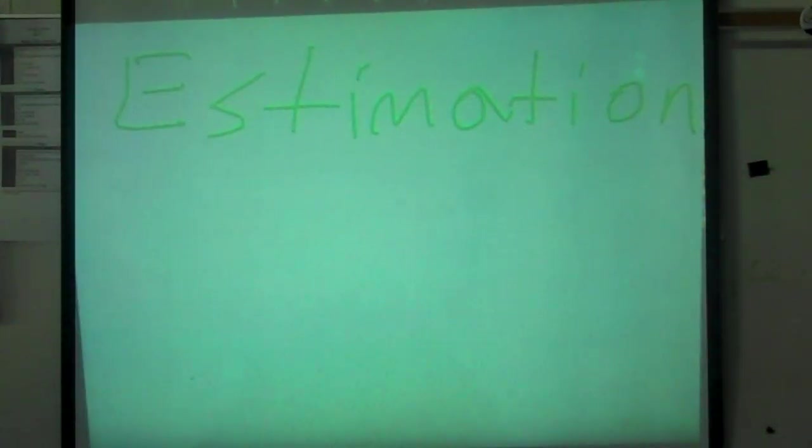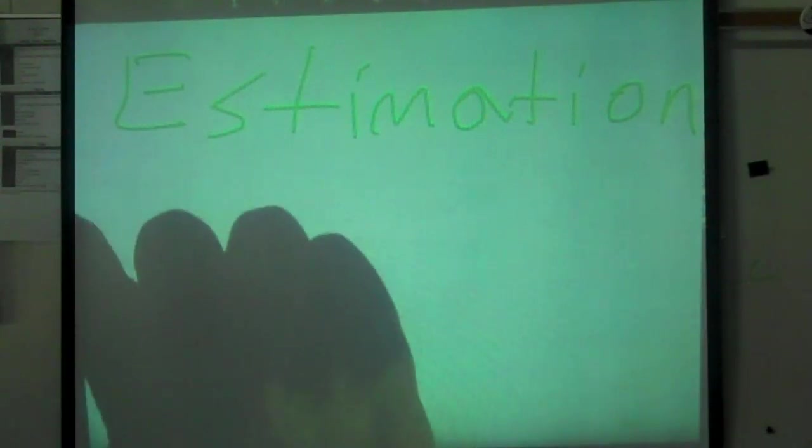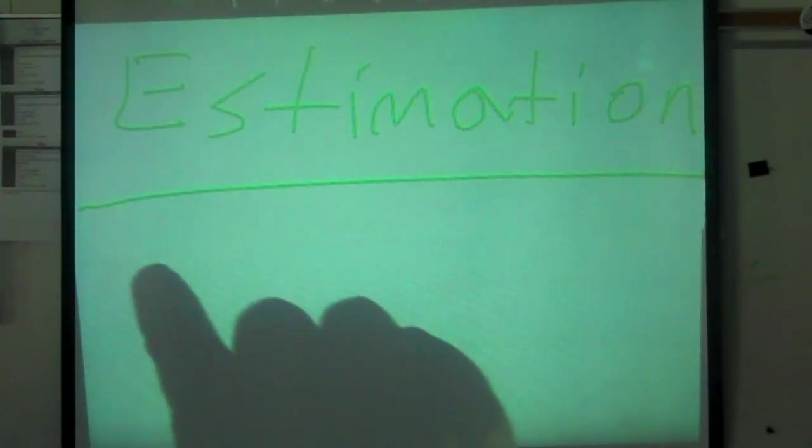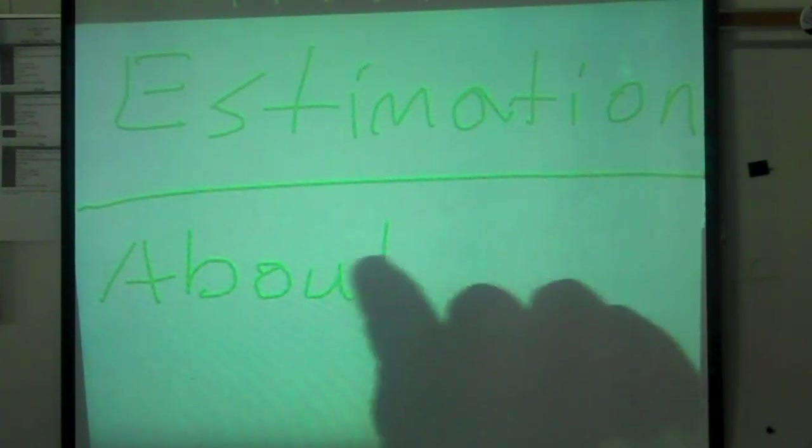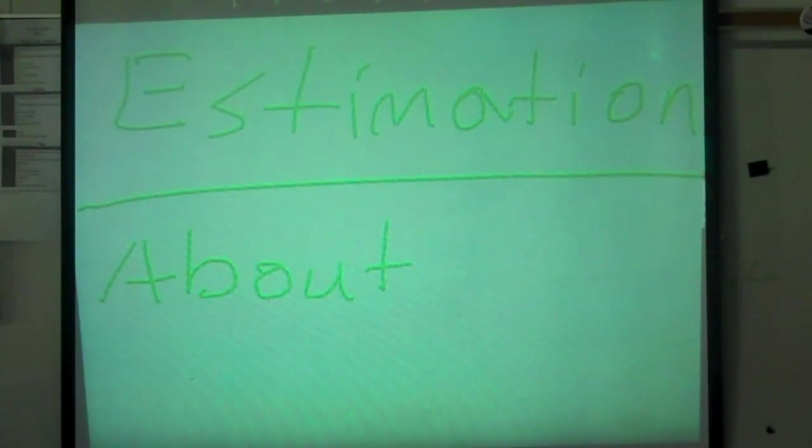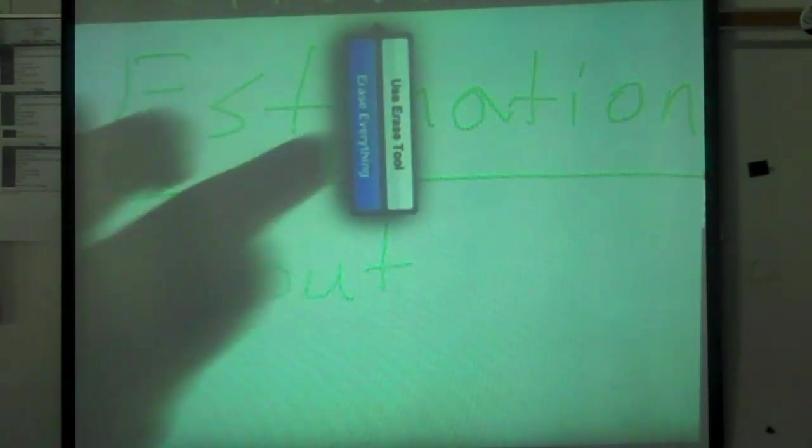Estimation is kind of the base of this unit, but it is going to be overshadowed by rounding. Estimation is when we are talking about the keyword, about. Let's say Matthew has 97 baseball cards, you could say Matthew has about 100, even though it is not an exact amount, it gives you an approximate number of how many baseball cards he has.